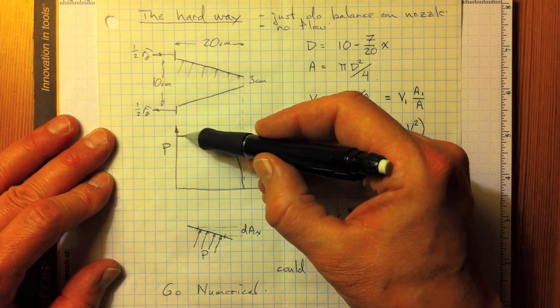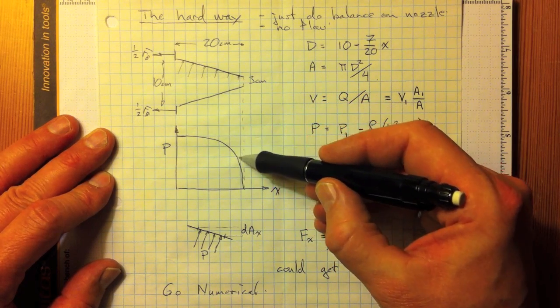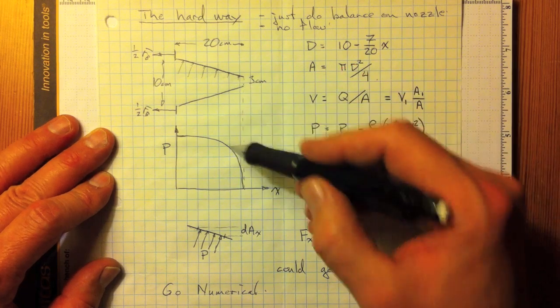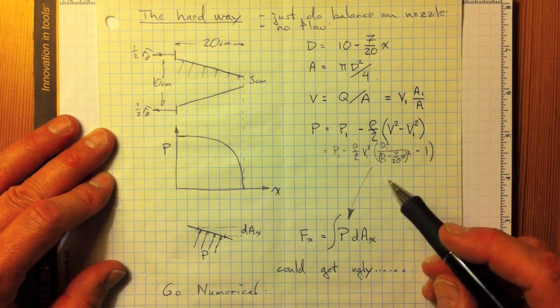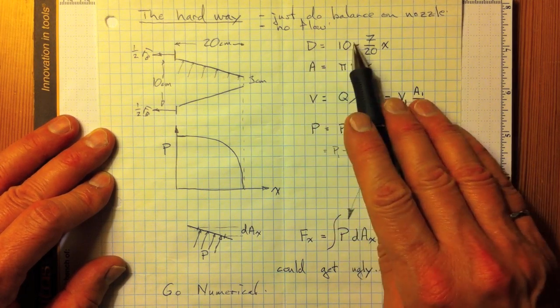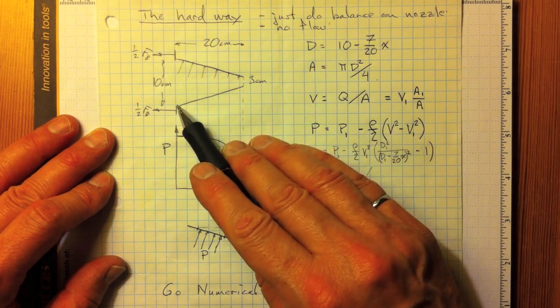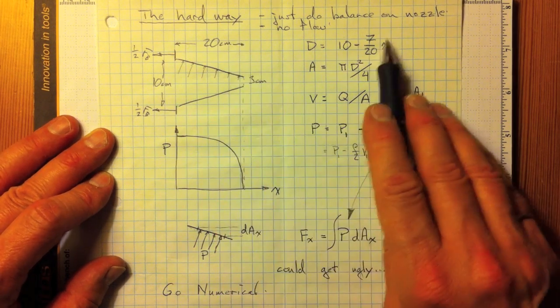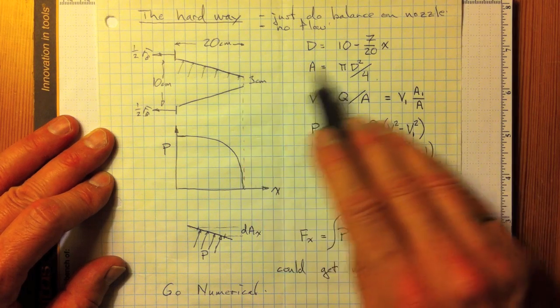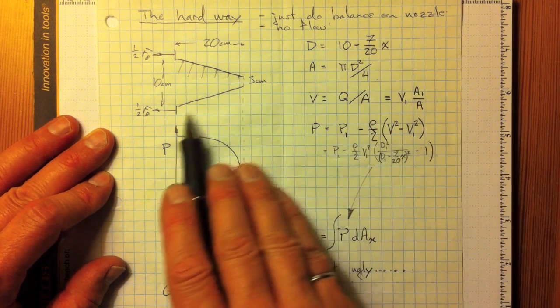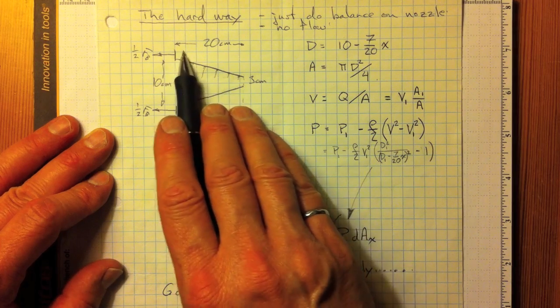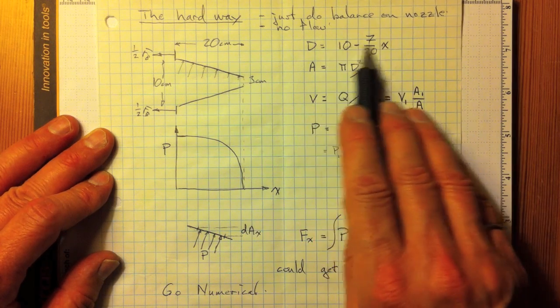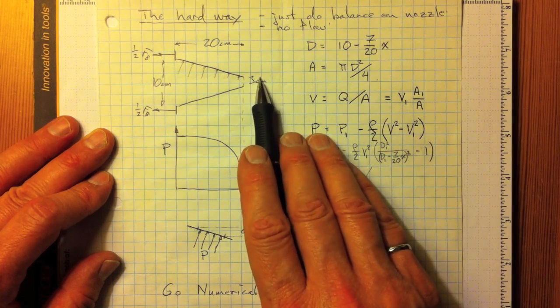So, what we see is that the pressure starts out like this, and it drops off sharply just in the last little bit as the fluid is accelerating, because of that v squared over 2g term. So, the diameter is 10 centimeters minus, if it's 20 centimeters long, 7 over 20 times x, where x is this dimension, so that when x gets to be 20, it'll be 10 minus 7 is 3 centimeters in diameter.